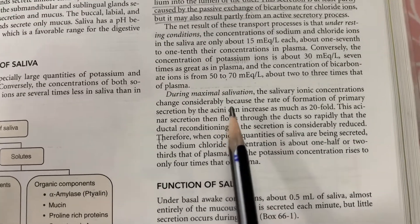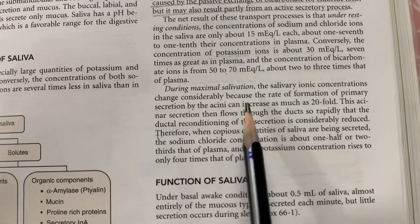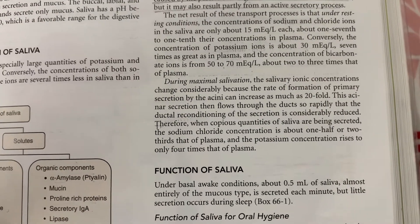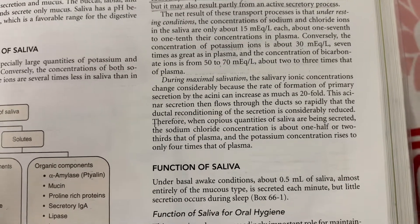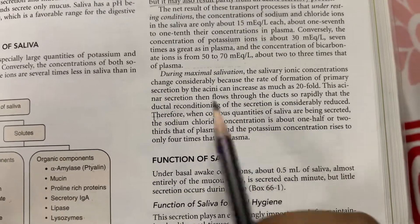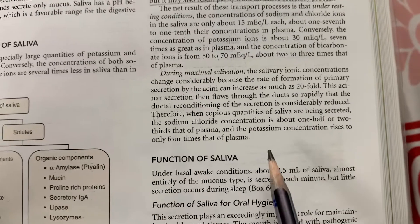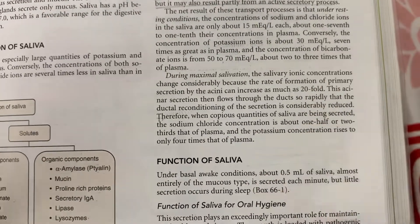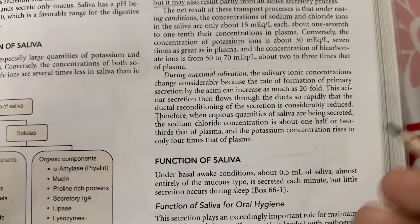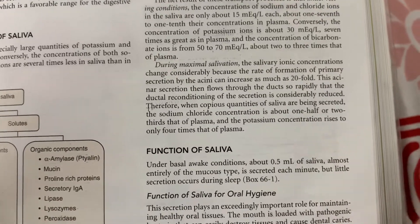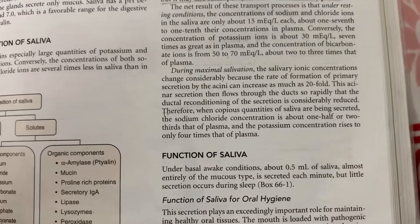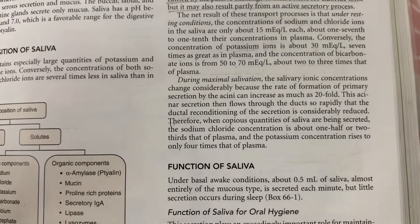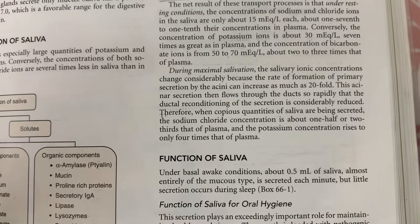During maximal salivation, the salivary ionic concentrations change. Because rapid acinar secretion flows rapidly through the ducts, there is less time for the ductal cells to reabsorb sodium and secrete potassium. So sodium chloride concentration is only about half that of the plasma.